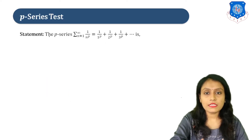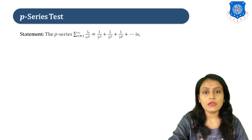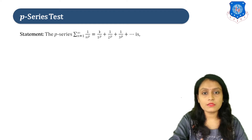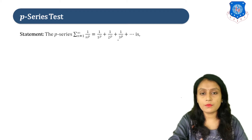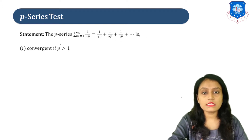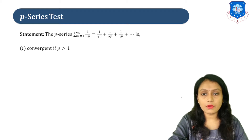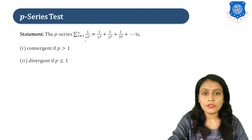The P-series 1 upon n raised to P can be written as 1 upon 1 raised to P plus 1 upon 2 raised to P plus 1 upon 3 raised to P and so on. This series is convergent if P is greater than 1, and divergent if P is less than or equal to 1.